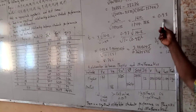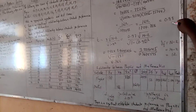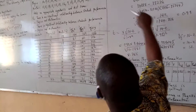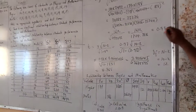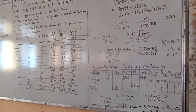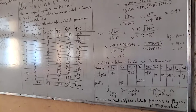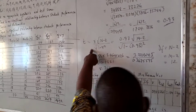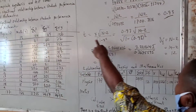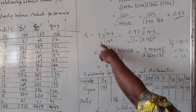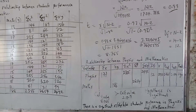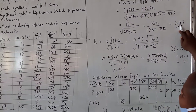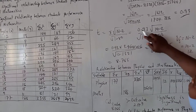This 0.93 is the extent of the relationship between the two variables, but we are not simply attaching importance to this correlation coefficient alone. We need to determine whether this correlation coefficient is significant or not. So we have determined r = 0.93, and now we apply the t-transformation formula: t equals r times the square root of n minus 2, all over the square root of 1 minus r squared. Wherever you see r, substitute the correlation coefficient.